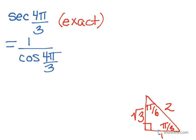So the entire thing, cosine of 4π over 3, ends up in the denominator. In order to answer this, we need to figure out what cosine of 4π over 3 is, and clearly 4π over 3 doesn't appear in our special triangle.